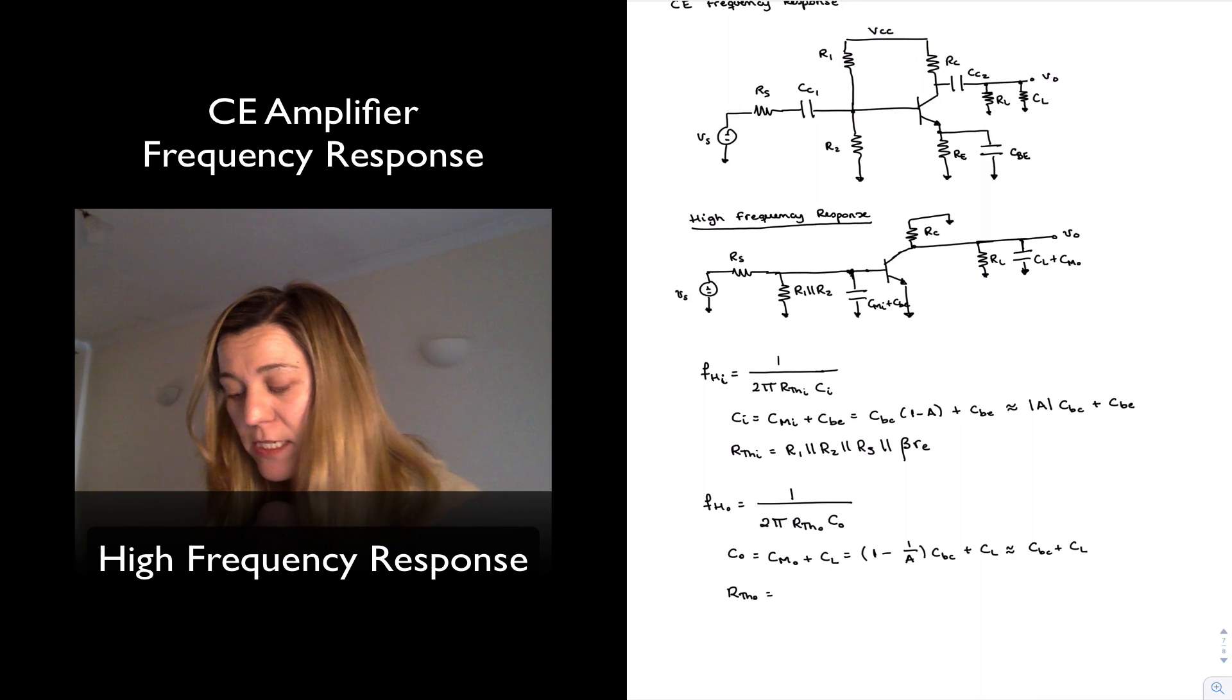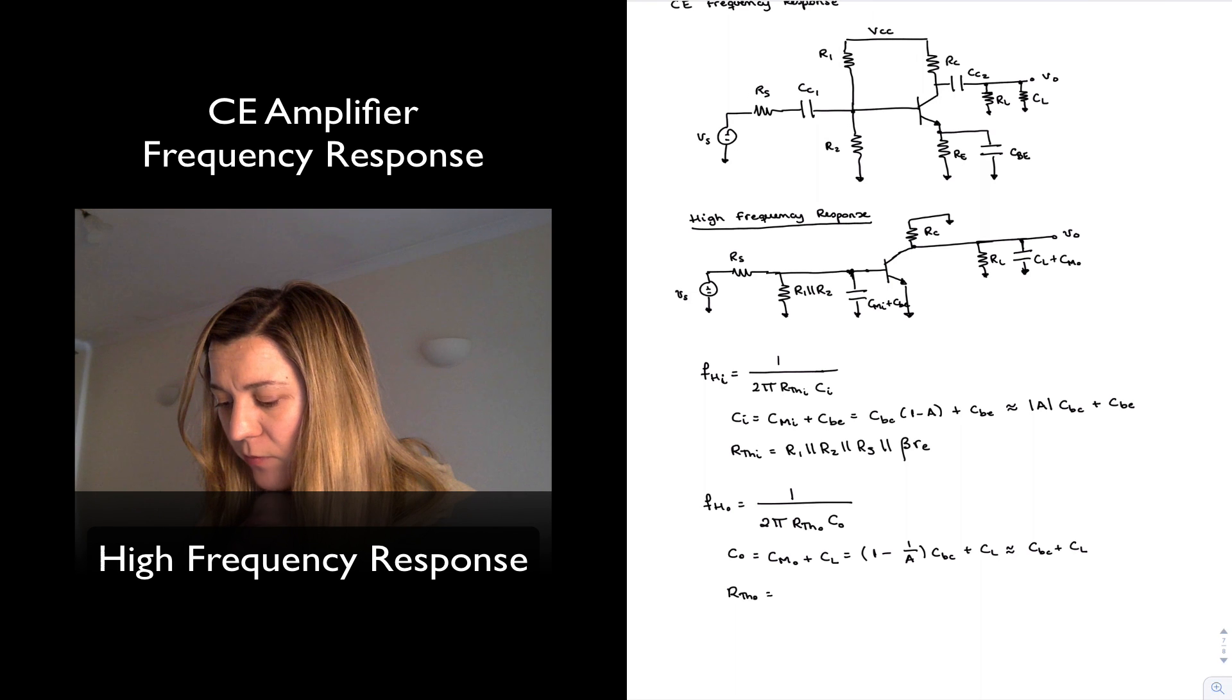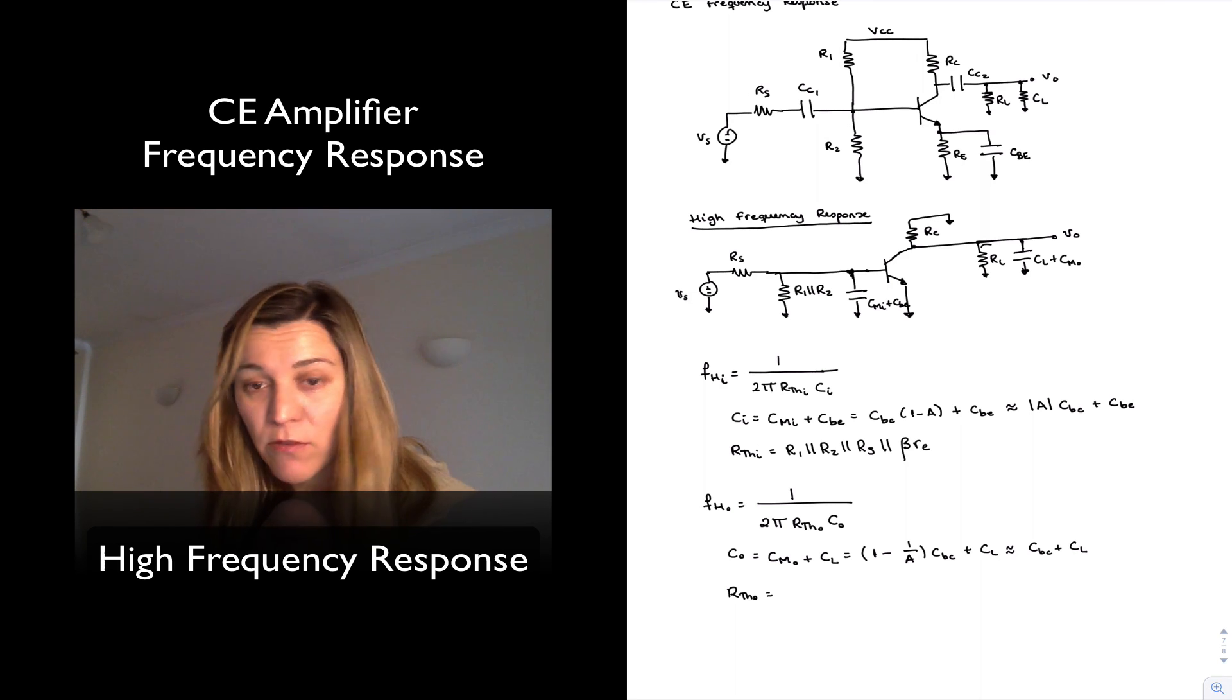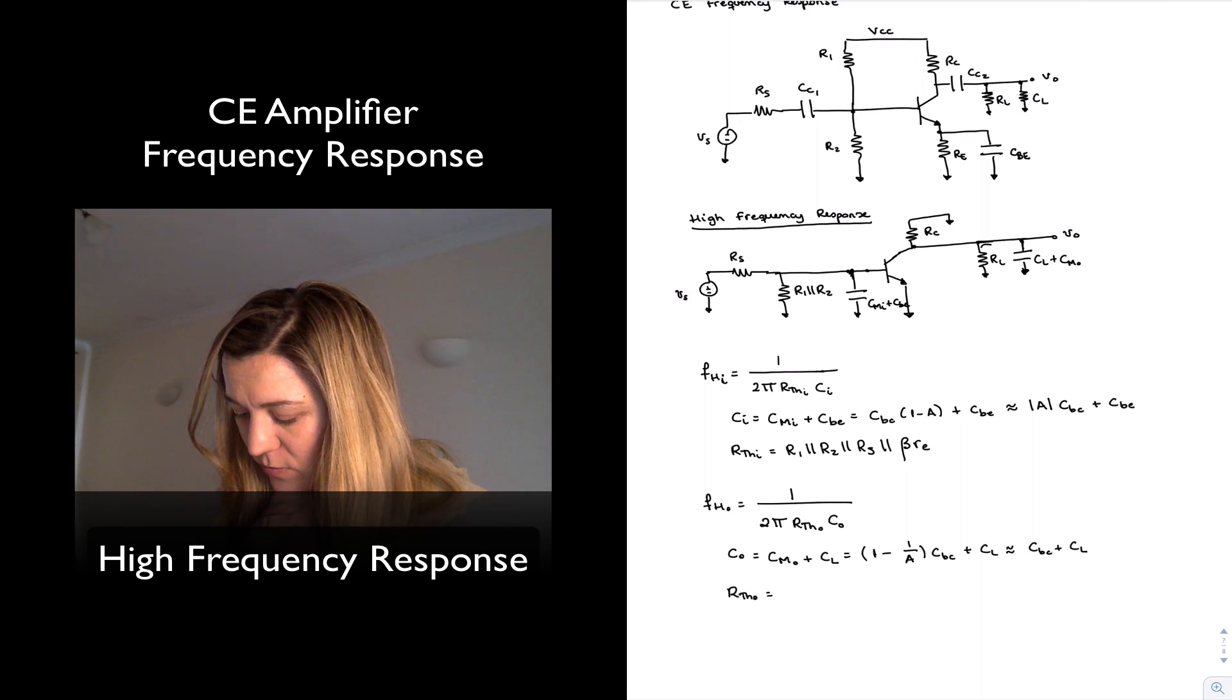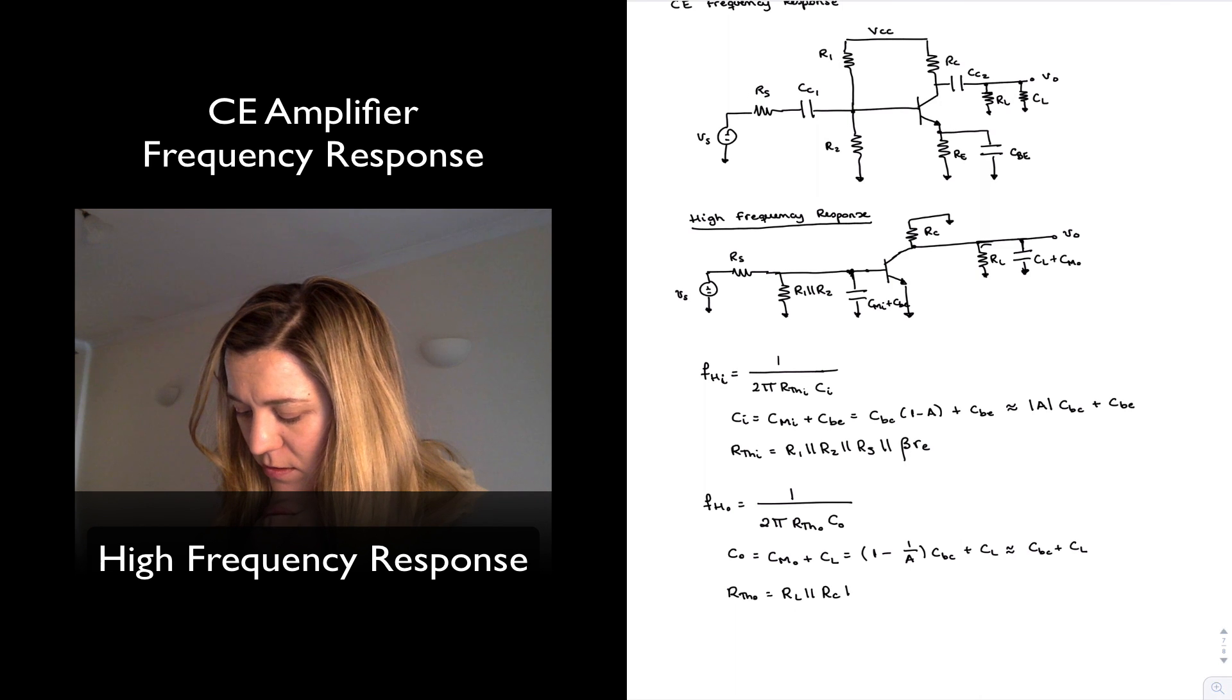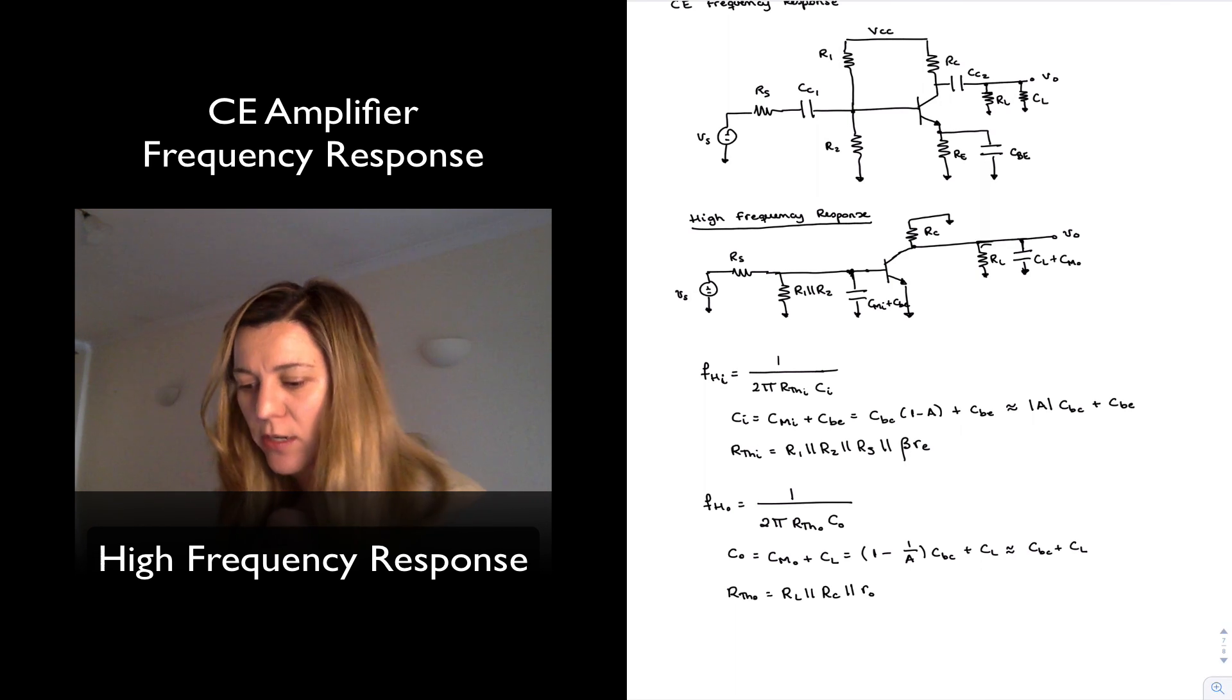And now the Thevenin resistance across the terminal of that capacitance is just going to be from the schematic or from the drawing, RL in parallel with RC. And if we want to consider little RO, it will also be in parallel with little RO. So RL in parallel with RC in parallel with little RO.